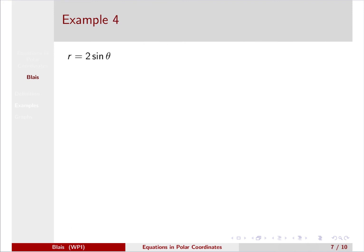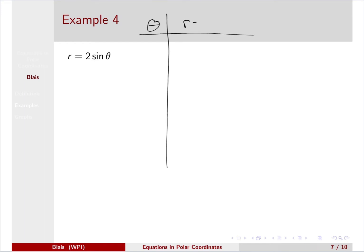Let's look at an exploratory example: R equals 2 sine theta. Let's try to imagine what this is by plugging in some points. We'll make a chart with different values for theta and check what r will be, choosing values to get an idea of what's happening in the first quadrant. Start when theta is zero: r is 2 times sine of zero, and sine of zero is zero.